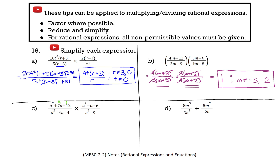Just like in Part B, I can now start cancelling. Before cancelling, I'll state the non-permissible values from the denominators. From (a plus 2) factors in the denominator, a cannot equal negative 2. From the (a plus 3) and (a minus 3) factors, a cannot equal plus or minus 3. Then: (a plus 3) cancels (a plus 3), (a minus 3) cancels (a minus 3), and (a plus 2) cancels (a plus 2).